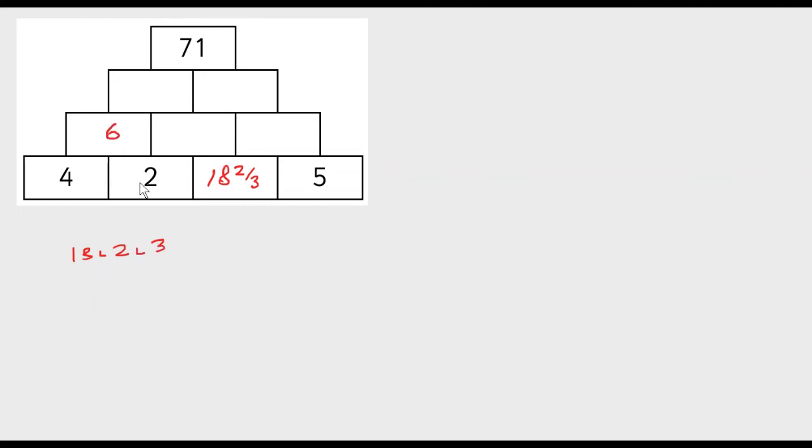4 plus 2 is 6, 2 plus 18 is 20, and the 2 thirds that we've got there. 18 and 5 is 23, plus the 2 thirds. Let's do the next line. 20 and 2 thirds and 6, 6 and 20 is 26, and our 2 thirds as well. 20 and 23 is 43, so let's just do this over here.